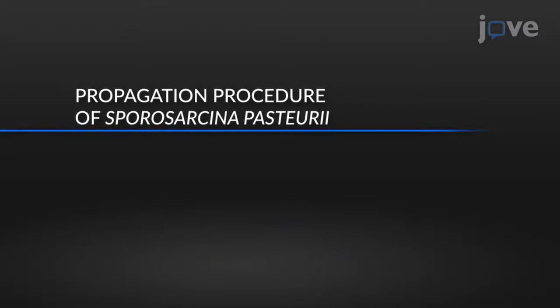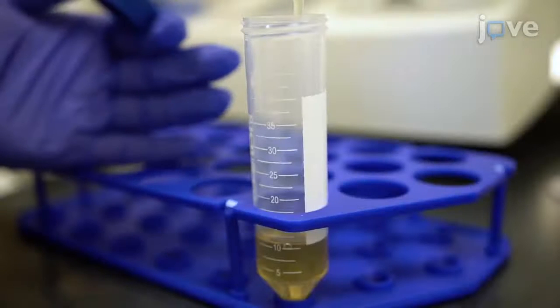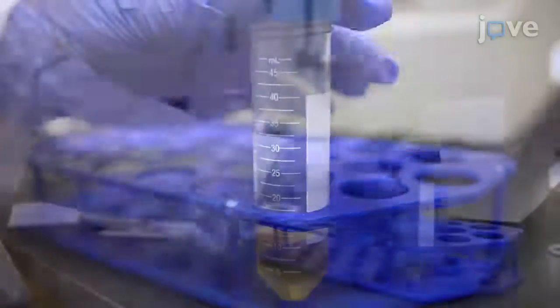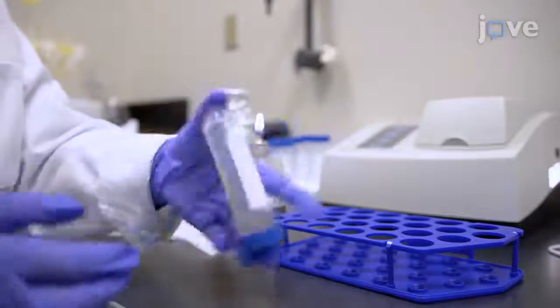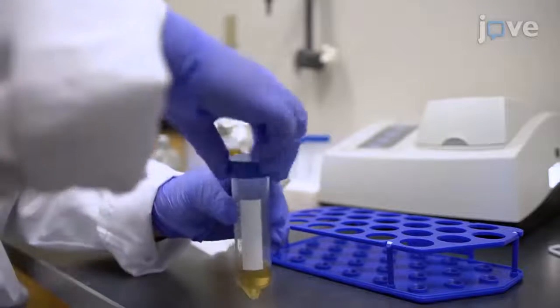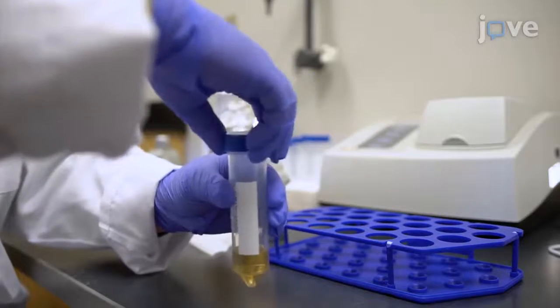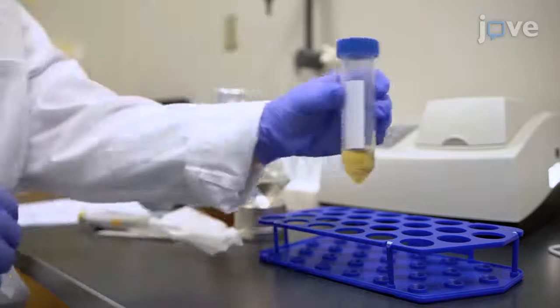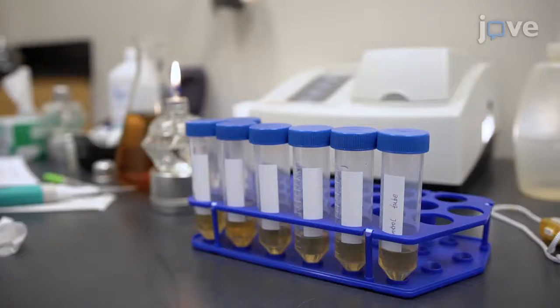To begin, transfer 0.1 mL of bacterial suspension to a centrifuge tube filled with 10 mL of fresh growth medium. Mix well by inverting and then loosen the lid of the tube in order to maintain aerobic conditions. Prepare six tubes of bacterial suspensions with growth medium and one control tube with 10 mL fresh growth medium alone.